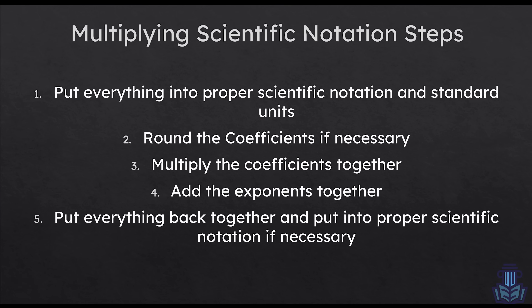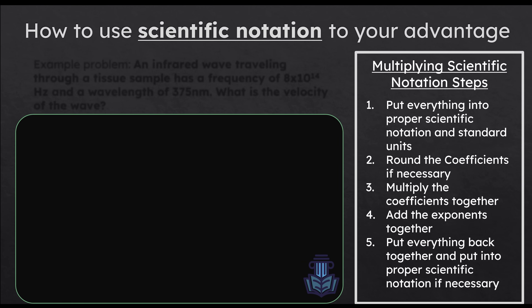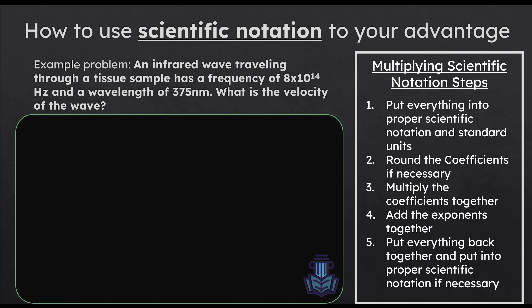Now to put an actual example in front of you — I'll keep all those steps on the last slide. We're going to use this example problem to explain why scientific notation can help you with a lot of the mental math on the MCAT. In this problem, they're asking us to solve for the velocity of a wave. The wavelength is given as 375 nanometers, and the frequency is given as 8 × 10^14 hertz. We're just solving v = λf.